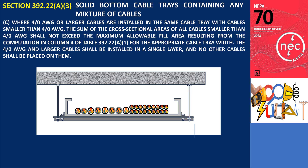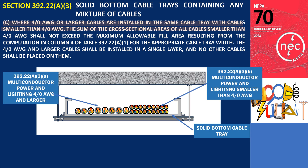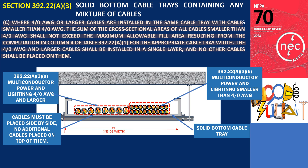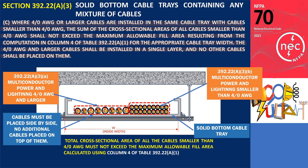Section 392.22(A)(3)(c) applies where 4-aught AWG or larger cables are installed in the same cable tray with cables smaller than 4-aught AWG. The sum of the cross-sectional areas of all cables smaller than 4-aught AWG shall not exceed the maximum allowable fill area resulting from the computation in Column 4 of Table 392.22(A)(1) for the appropriate cable tray width. The 4-aught AWG and larger cables shall be installed in a single layer, and no other cables shall be placed on them. This subsection is the combination of subsections 392.22(A)(3)(a) and (b), where the cable tray contains a mix of 4-aught AWG or larger cables and cables smaller than 4-aught AWG.